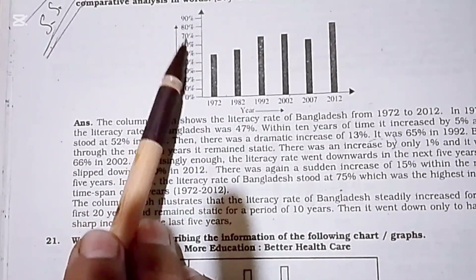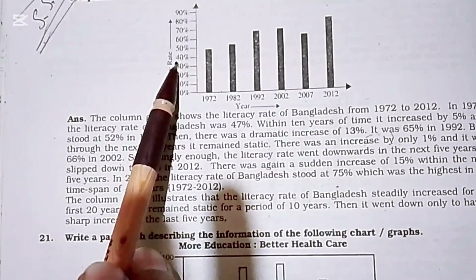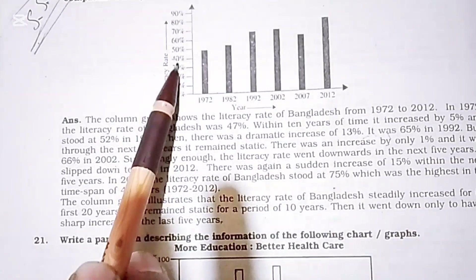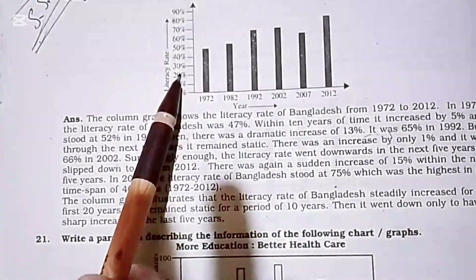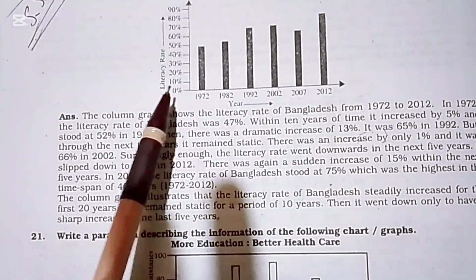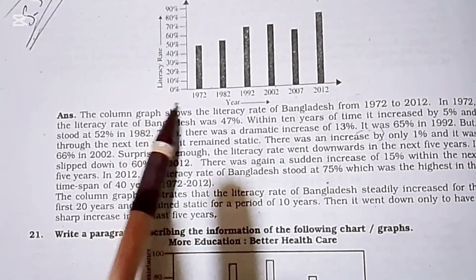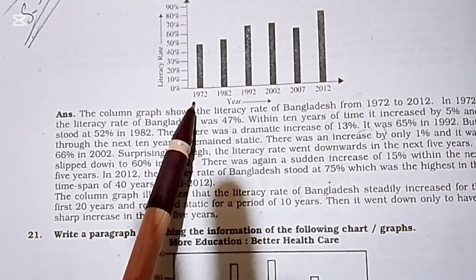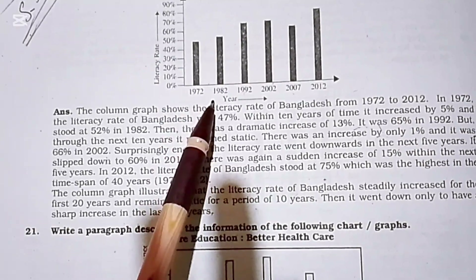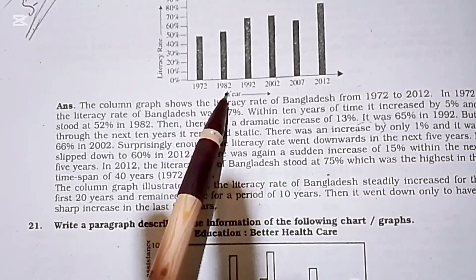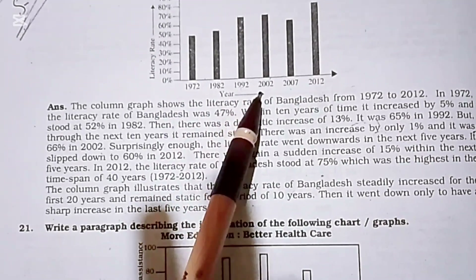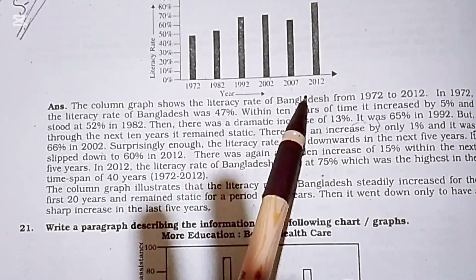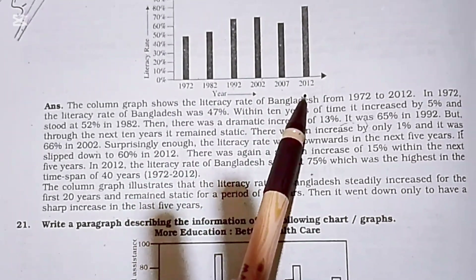The graph's vertical axis shows percentages from 0% to 90%, and the horizontal axis covers the years 1972, 1982, 1992, 2002, 2007, and 2012.